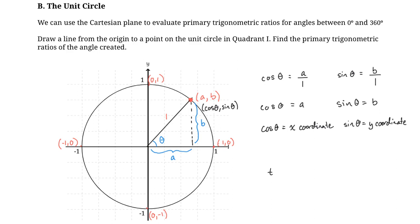Now let's find what tan(θ) equals. The tangent of any angle is the opposite over the adjacent, so in this case it's B over A. But B equals sin(θ) and A equals cos(θ). So tan(θ) = sin(θ) / cos(θ). We actually established this in a previous lesson, and it holds true once again.